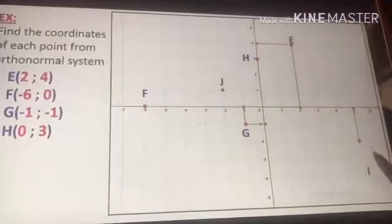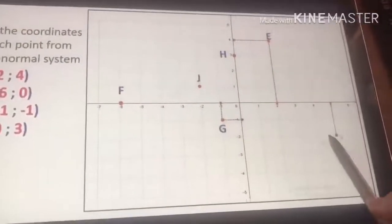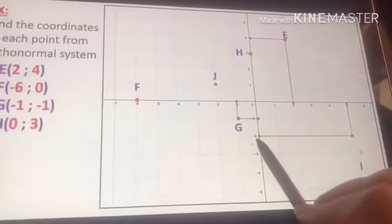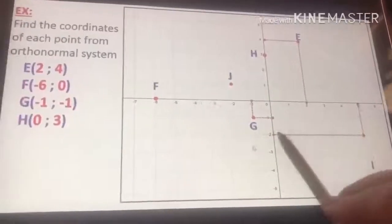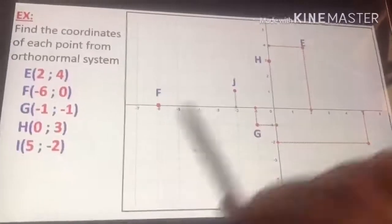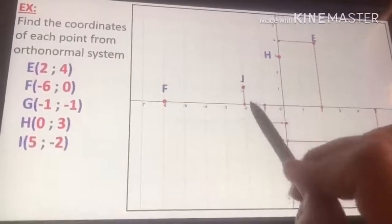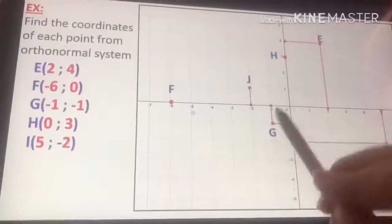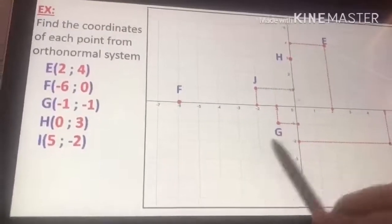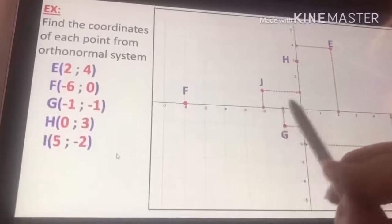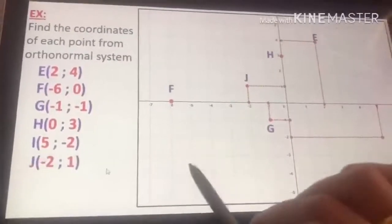Now, I go to x, then go back to y. So it's 5 minus 2. X, then y. 5 and minus 2. Now j. X, then y. It's minus 2, 1. The coordinates of j are minus 2, 1. We put first the x, and then we put the y.